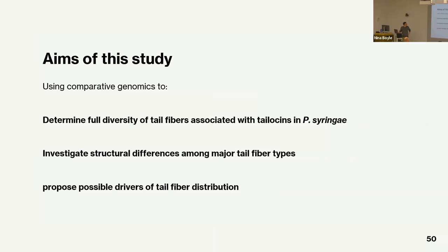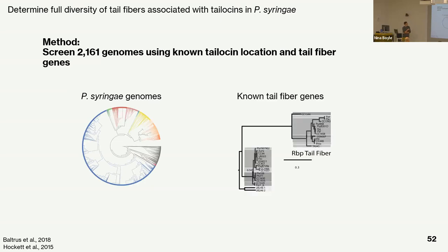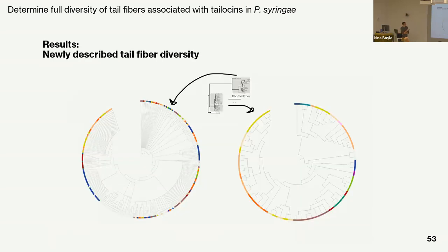The goal of this project was to expand on this — that was about 60 strains, I have about 2,000 genomes — to find more diversity and figure out what's going on with this pattern. Three specific aims: determine the full diversity of tail fibers using genomic methods; use AlphaFold to predict protein structures and see how different these tail fibers actually are; and propose possible drivers of tail fiber distribution within the species complex.